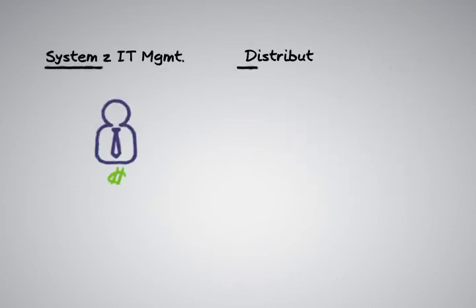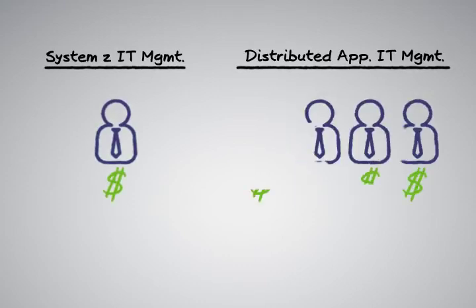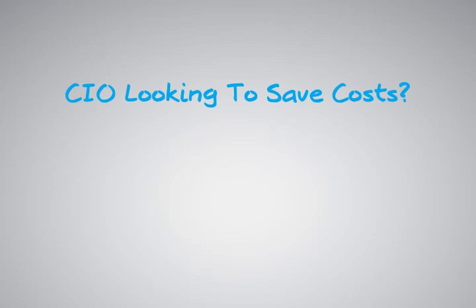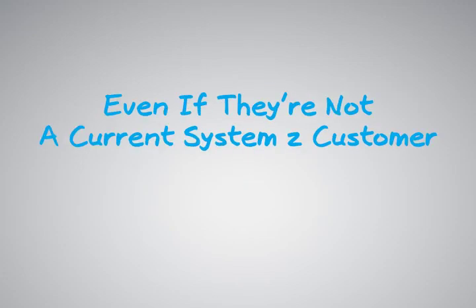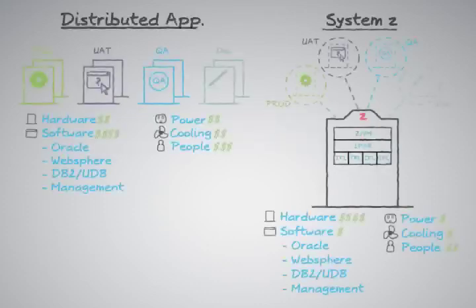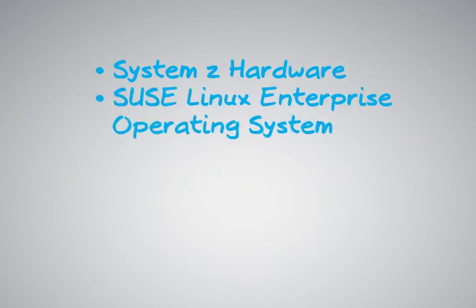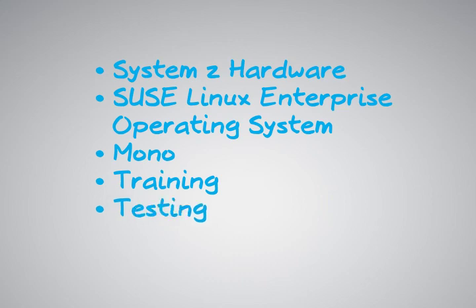You don't need as many people managing System Z and its virtual guests as you do in the distributed environment. When a CIO is looking to save cost in their data center, think about mentioning System Z and the server consolidation capabilities it offers. We've had many new customers come on board who have never been System Z customers before. I'd also like to mention the SUSE Linux Enterprise Consolidation Suite for System Z — a suite Novell and IBM have put together that provides customers not only System Z hardware and the SUSE Linux operating system, but also Mono, training, testing, and support.